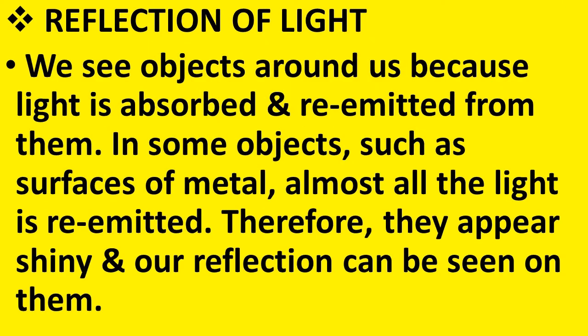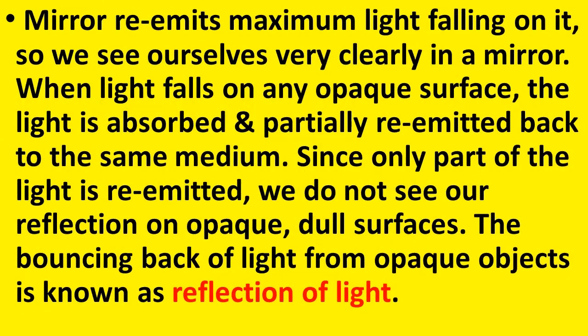Now let us see what is reflection of light. We see objects around us because light is absorbed and re-emitted from them. In some objects such as surfaces of metal, almost all the light is re-emitted. Therefore they appear shiny and our reflection can be seen on them. Reflection means the bouncing back of light rays from any surface. Mirror re-emits maximum light falling on it, so we see ourselves very clearly in a mirror.